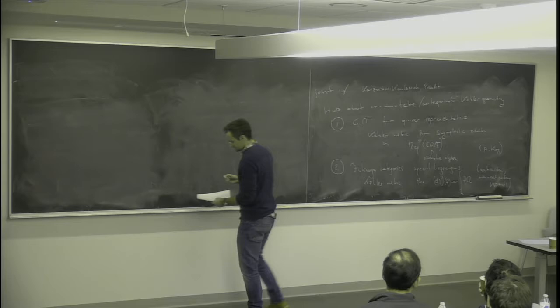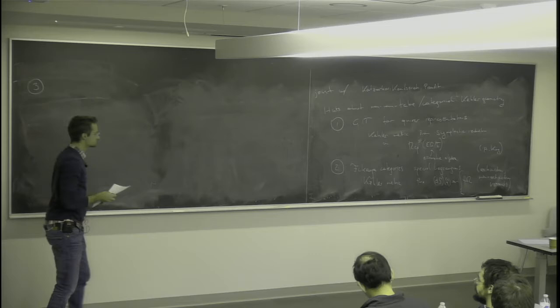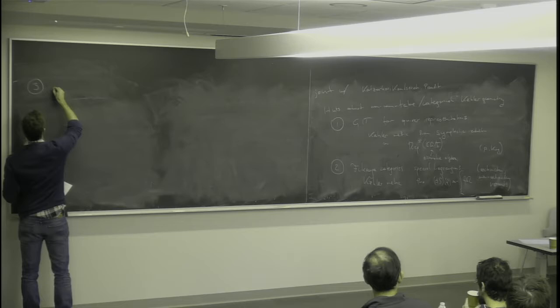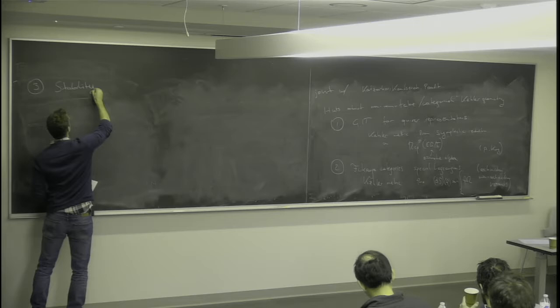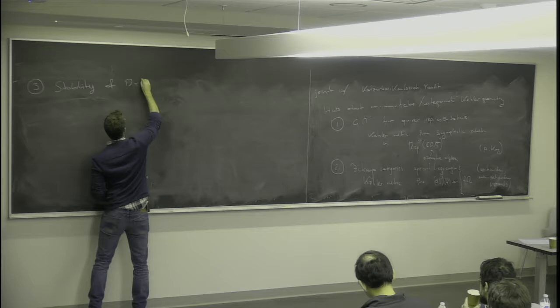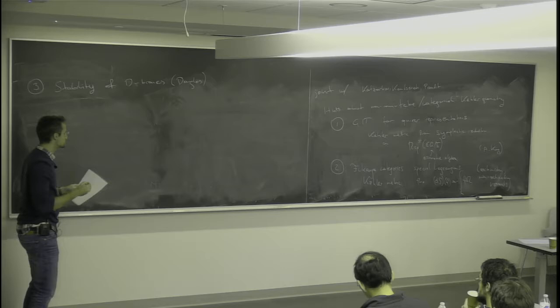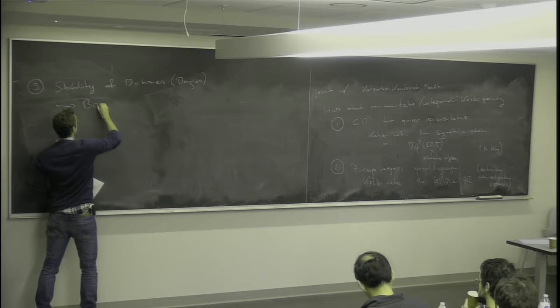Another input that tells you what a Kähler class could be for a category is stability conditions. Originally this comes from axiomatizing stability of D-branes due to Douglas, and then Bridgeland made the axioms work and came up with the theory of stability conditions.